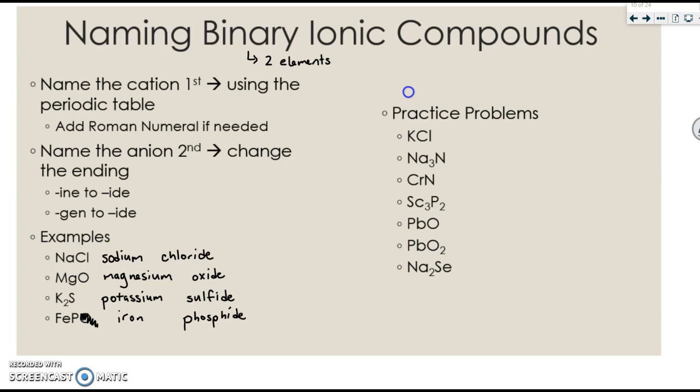So we have to determine what the charge of the iron is. We're going to use the other portion of the compound, the anion, to determine this. Phosphorus has a negative 3 charge. Ionic compounds are neutral. So if the phosphorus is negative 3, the iron has to be the opposite of that, positive 3. So this would be iron (III) phosphide.